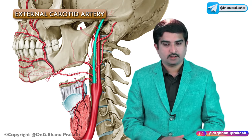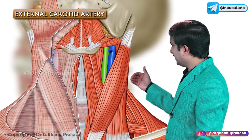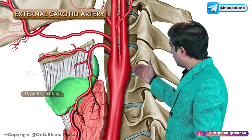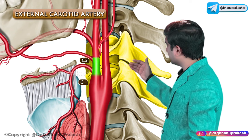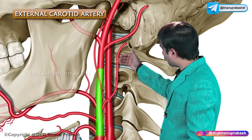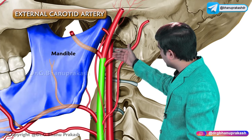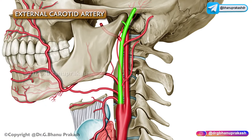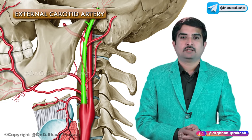The external carotid artery begins in the carotid triangle at the level of the upper border of the thyroid cartilage, opposite the disc between the third and fourth cervical vertebrae. It runs upwards and slightly backwards and laterally, and terminates behind the mandible by dividing into the maxillary and superficial temporal arteries. It has a slightly curved course so that it is anteromedial to the internal carotid artery in its lower part and anterolateral to the internal carotid artery in the upper part.